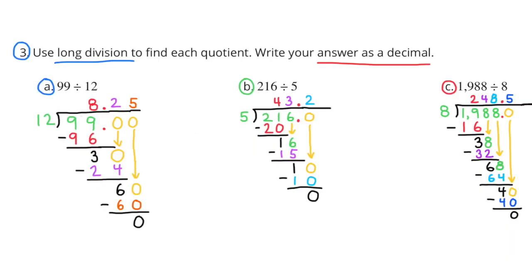Number 3. Use long division to find each quotient. Write your answer as a decimal. A. 99 divided by 12. How many times does 12 go into 99? 8 times. 8 times 12 equals 96, and the difference is 3. Make sure you put your decimal in and bring down the 0 in the tenths place. How many times does 12 go into 30? Twice. 2 times 12 is 24, and the difference is 6. Bring down the 0 in the hundredths place. How many times does 12 go into 60? 5 times. 5 times 12 is 60, and 60 minus 60 gives a remainder of 0. So 99 divided by 12 equals 8 and 25 hundredths.